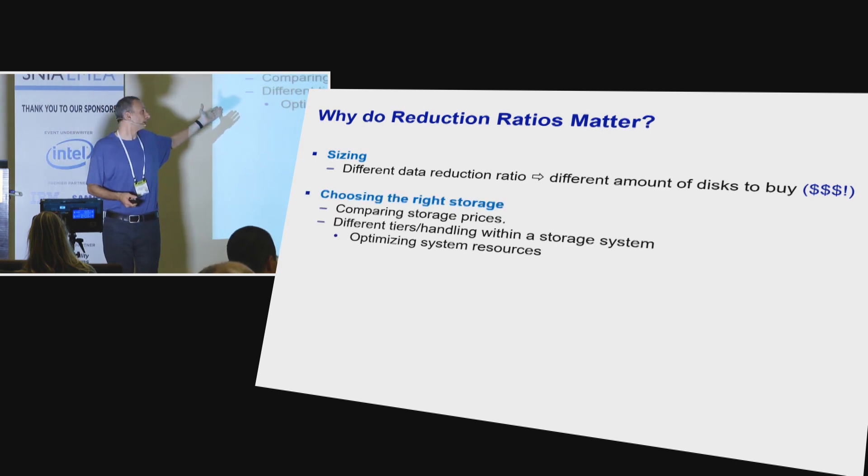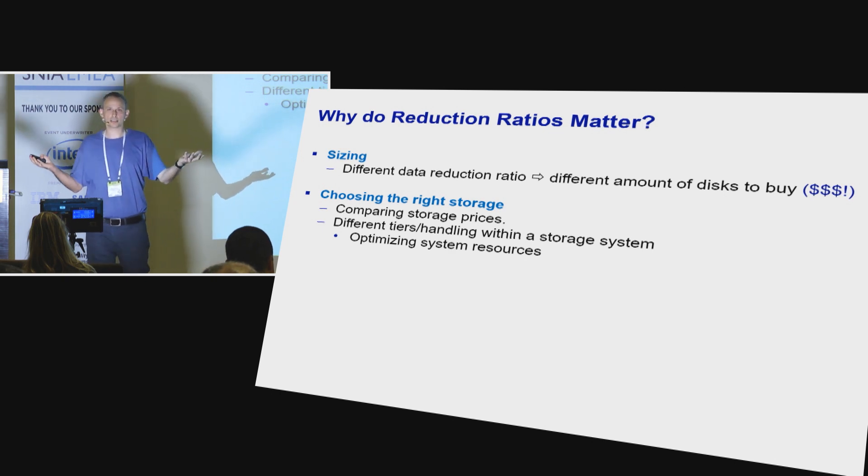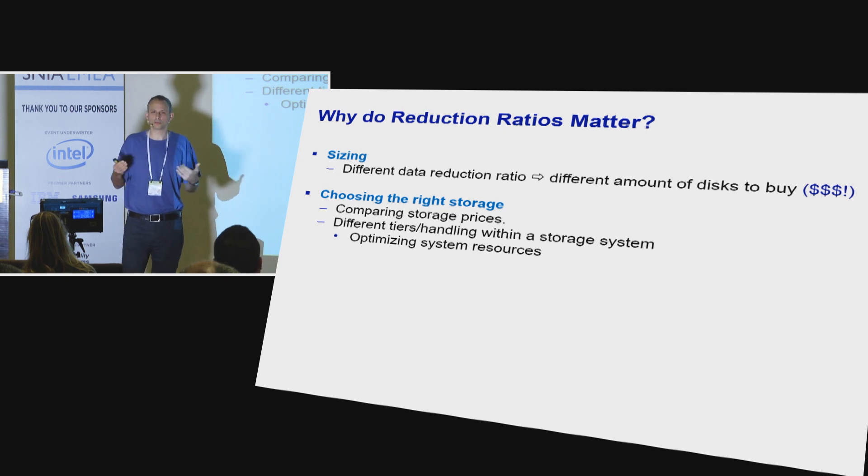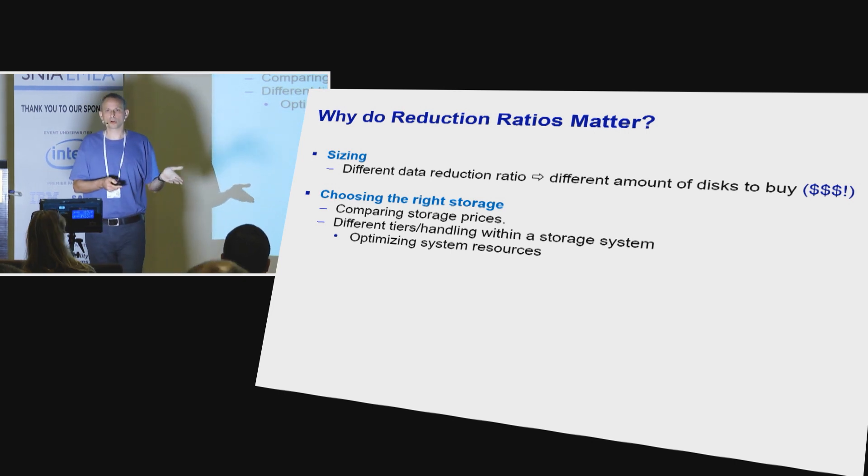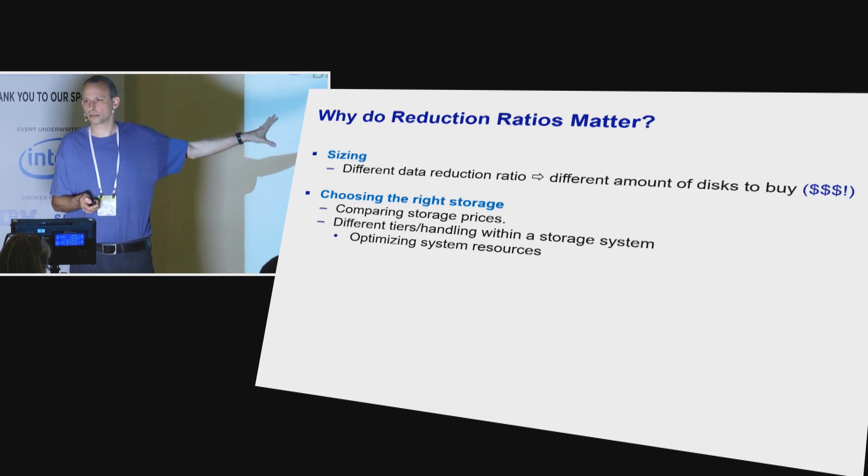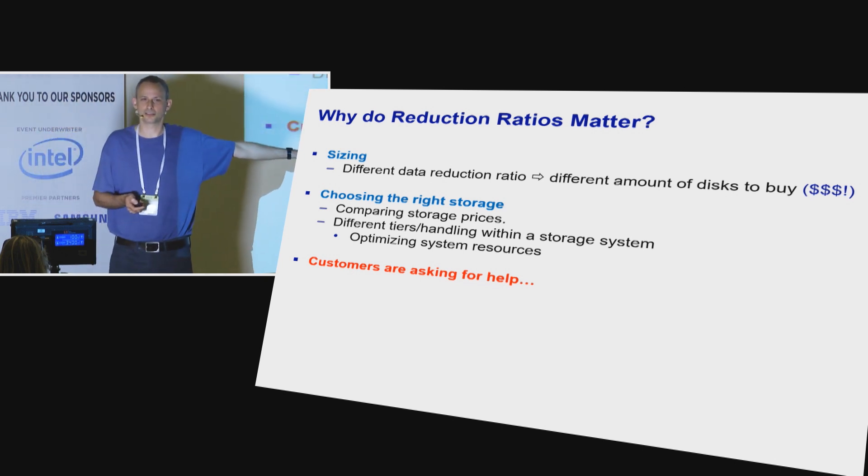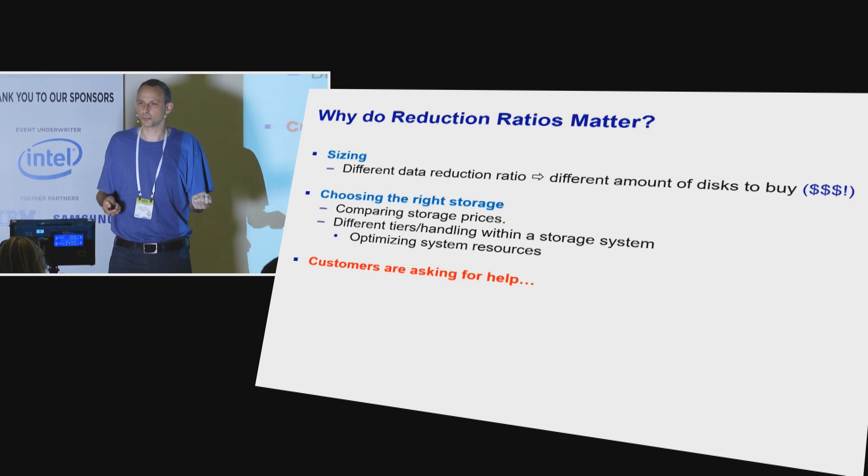The other is for comparing storage and storage prices. You have one storage device that has compression, has dedupe, it has an initial price. You have another one with different attributes and different prices. But the amount of money you're going to pay at the end depends on the data reduction. It's also not only a question of choosing the right storage, but within a single storage you could have some resources allocated to data reduction, and they're limited. And you want to invest them in the right places. You don't want to try to compress something that's not compressible. That's a waste of resources. So those are the two big reasons. The third one is customers are asking for this. This comes up all the time. If you're not convinced, then when a customer comes along, then people start being convinced that you want to do something about it.